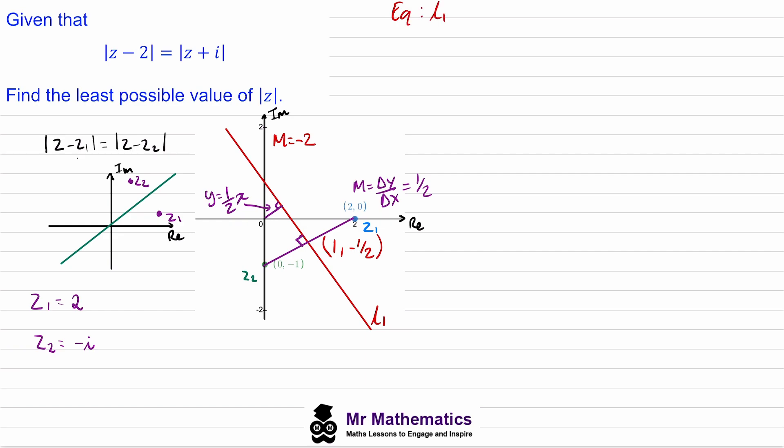will be the gradient negative 2 multiplied by (x minus 1), and this will equal y minus negative 1/2, so plus 1/2.